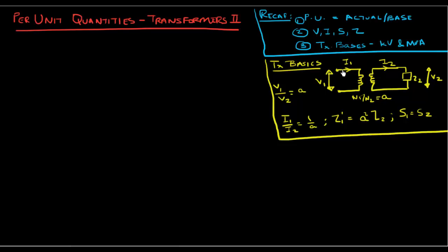The transformer bases, if chosen correctly, can eliminate the turns ratio — this is what we saw in the last video. By 'correctly,' I mean you define the voltage and power base parameters in one circuit, then calculate the voltage and power parameters in the other circuits such that voltage parameters are changed based on the turns ratio and power parameters remain the same across all circuits.